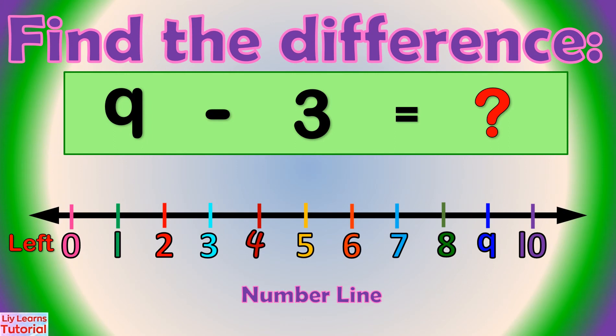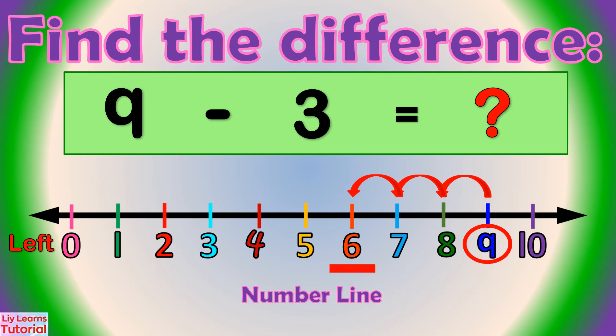Find the difference of 9 minus 3. We start from the minuend, which is 9. Then we move 3 numbers to the left: 1, 2, 3. We land on 6. So the difference of 9 minus 3 is 6.